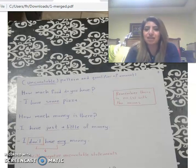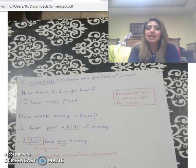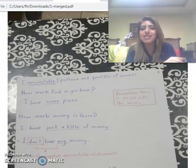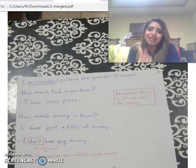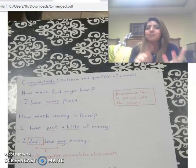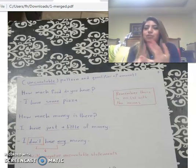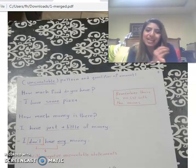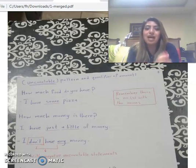'How much food do you have?' — meaning how much food do you have with you? The answer: 'I have some pizza.' So when you say 'some', the quantifier 'some' tells you more about the amount of pizza. We didn't say a slice of pizza or two slices — we said 'some', meaning a little of the pizza. The noun here is uncountable, so we use the quantifier of amount 'some'.